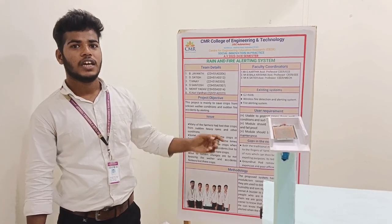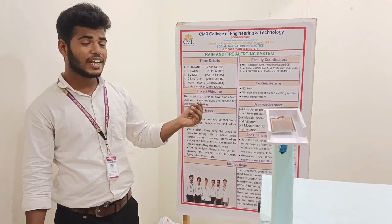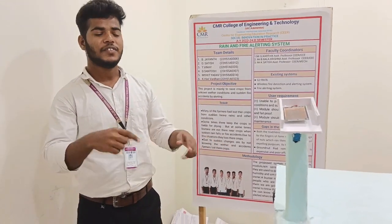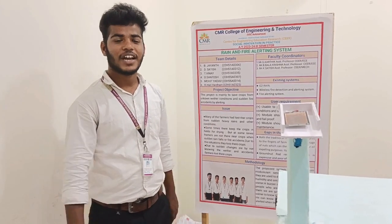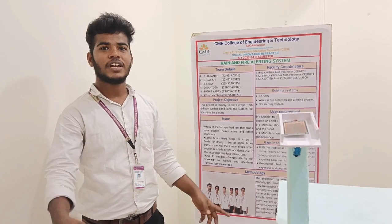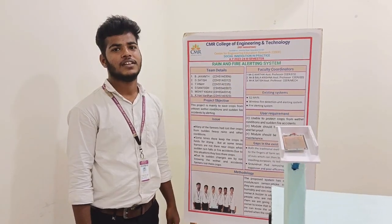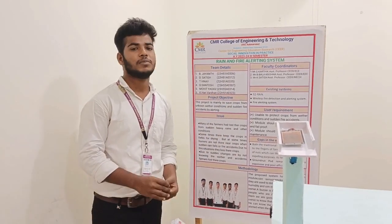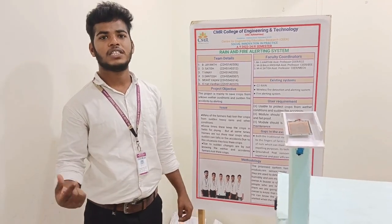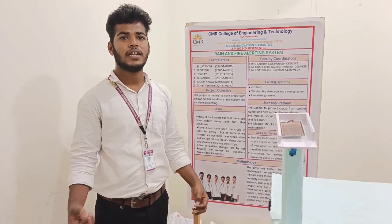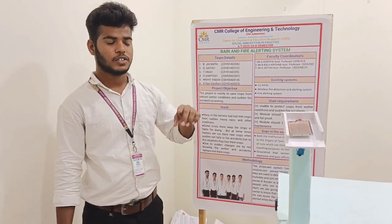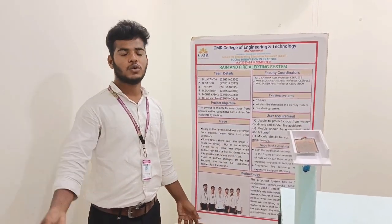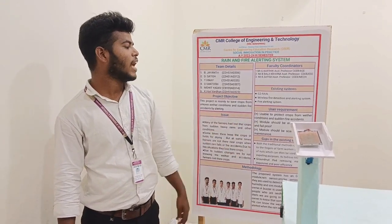A buzzer sound will alert people near the field. There are several types of existing solutions. These include G2 rain, wireless fire detection and alarm, and fire alarm systems. G2 rain detects temperature conditions and gives live data to monitors and phones. Wireless fire detection systems are used in shopping malls and factories, detecting smoke and buzzing an alarm. This fire alerting system is also used in forests.